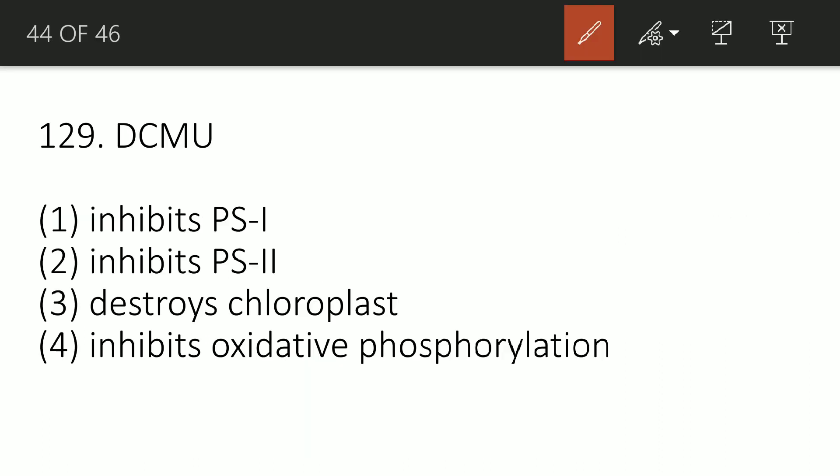Question 127: DCMU, also known as diuron, does what? Option A: inhibits photosystem I, B: inhibits photosystem II, C: destroys chloroplasts, or D: inhibits oxidative phosphorylation. The correct option is B — it inhibits photosystem II. DCMU is a herbicide also known as diuron, and it blocks electron flow at the quinone acceptor of photosystem II.